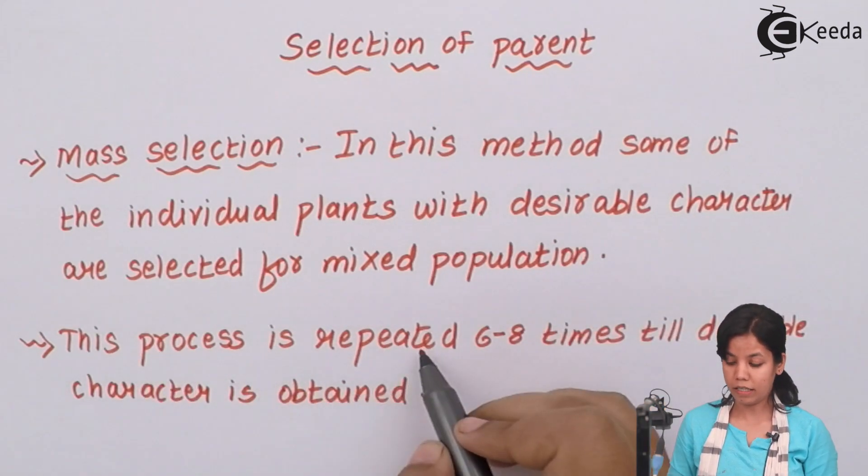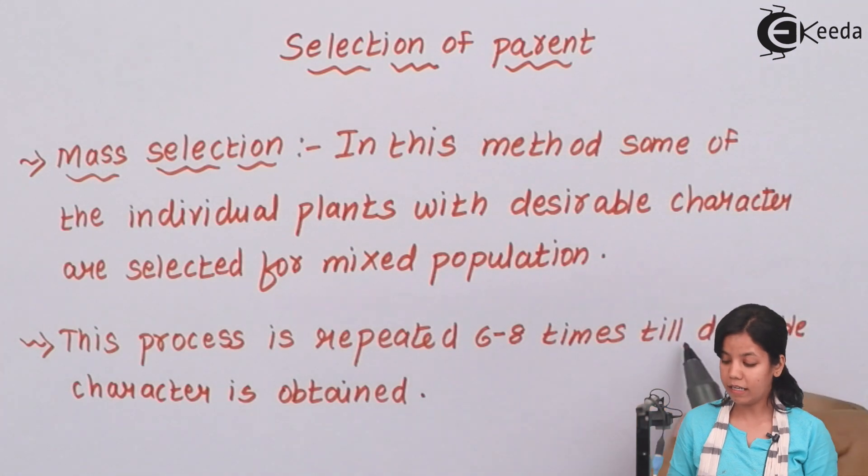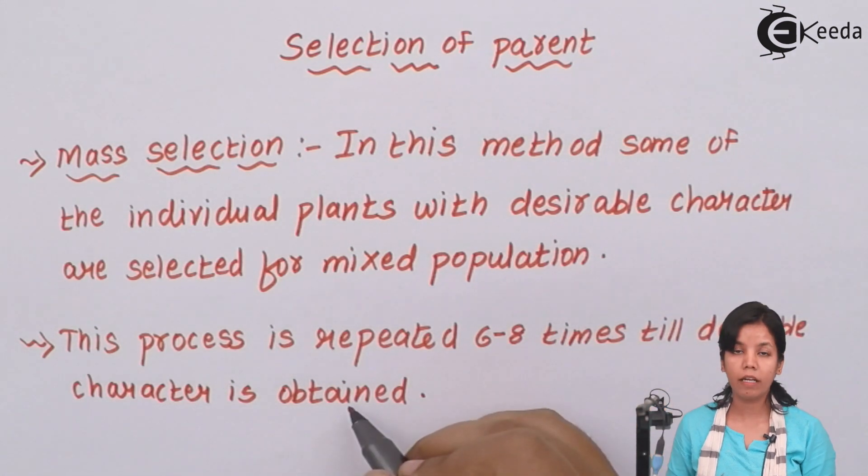This is time-consuming process. In this process is repeated six to eight times till desirable character is obtained. This process goes on for good period of time until you get that one striking character. It could be yield or the nutritional content.